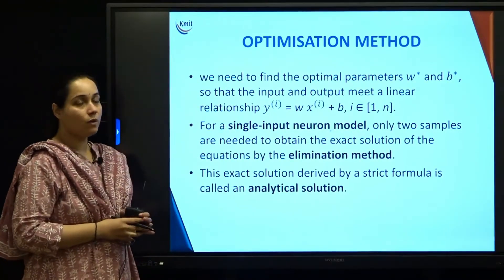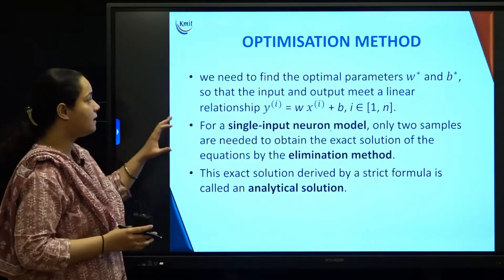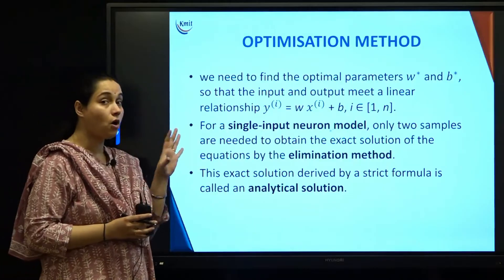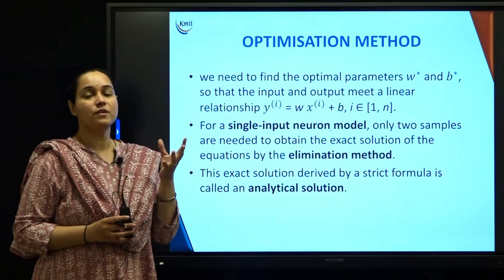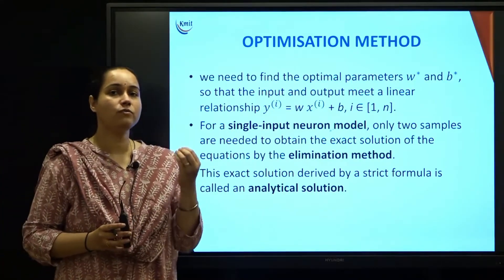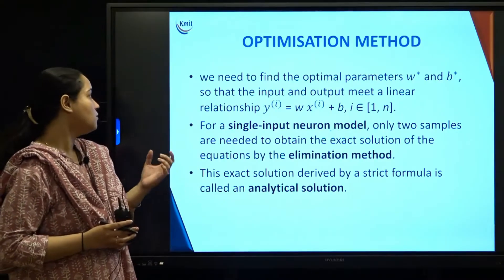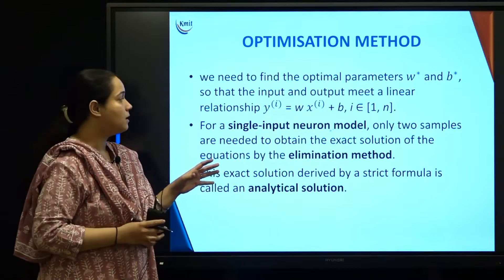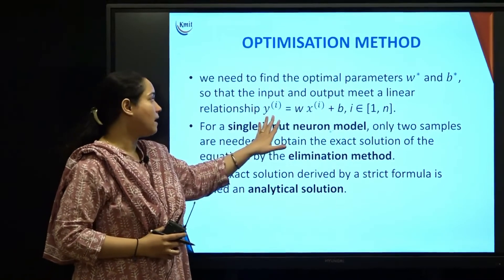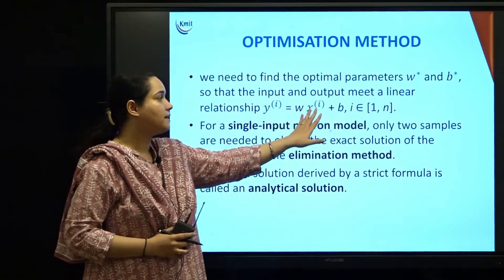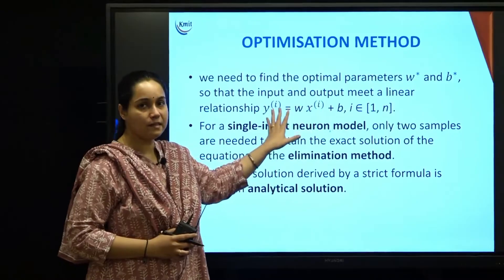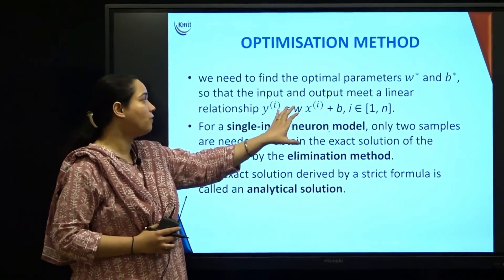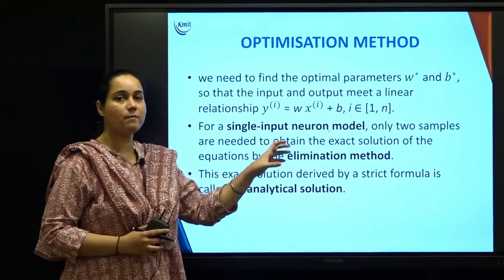The optimization method — what exactly is it? As seen from our last class, we need to find out the optimal parameters, which are the optimal weights and biases, so that the input and output meet a linear relationship: y_i = w·x_i + b. We require proper values of weights and biases to get a best fit line.